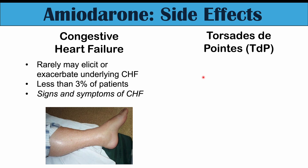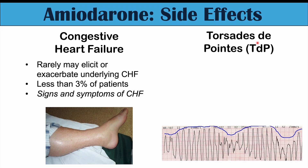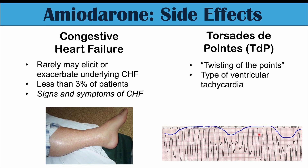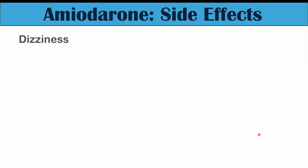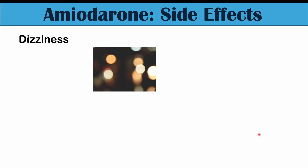Another subset of patients can have an increased risk of torsades de pointes — meaning 'twisting of the points' — seen on ECG. It's a type of ventricular tachycardia and is actually one of the most common, if not the most common, drug-induced torsades de pointes. It is a life-threatening condition. Dizziness can also occur in patients taking amiodarone.